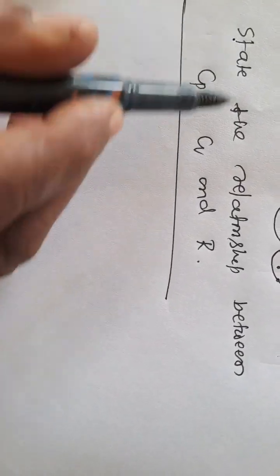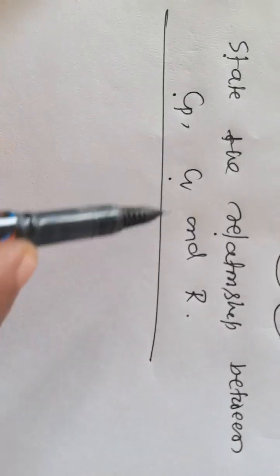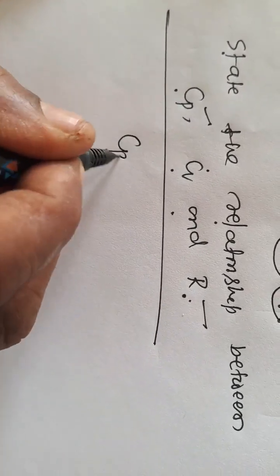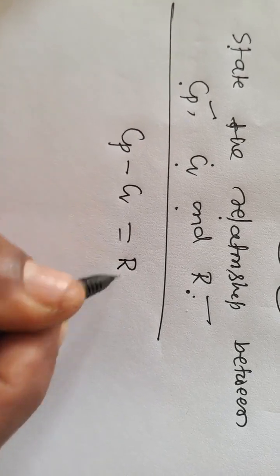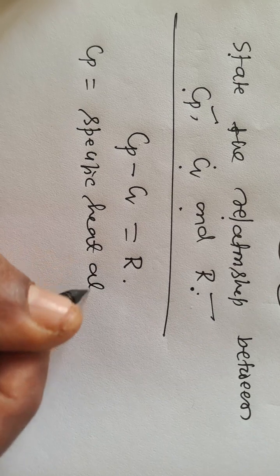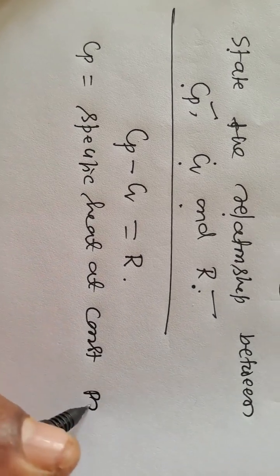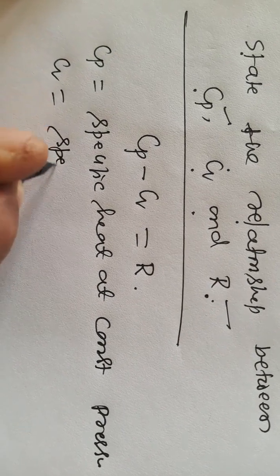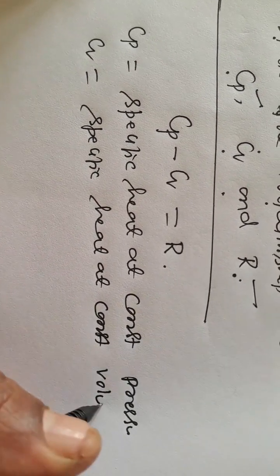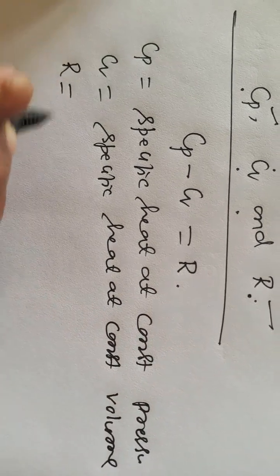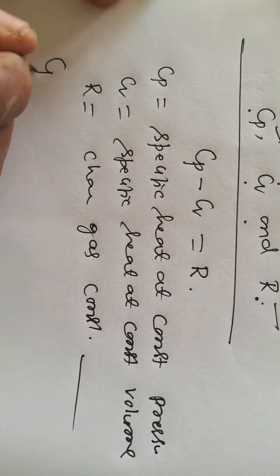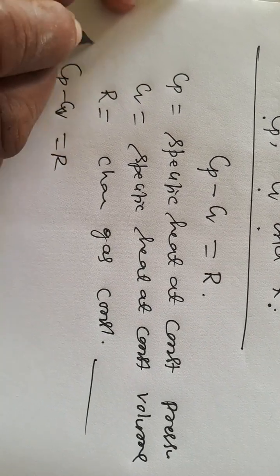What is the relationship between Cp, Cv, and R? The relationship between Cp, Cv, and R is given by Cp minus Cv is equal to R, where Cp is specific heat at constant pressure, Cv is specific heat at constant volume, and R is the characteristics gas constant. Therefore, Cp minus Cv equals R is the required relationship.